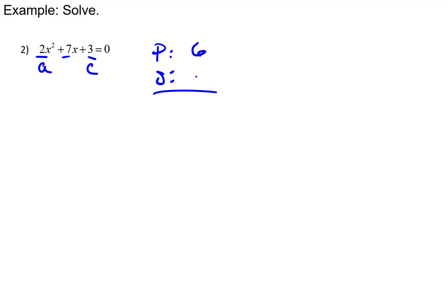And then the sum is just the middle term, so positive 7. If you can find two numbers that have this sum and this product, that's a good sign. In this case, it does work as 6 and 1. Now that simply tells us that it is factorable.